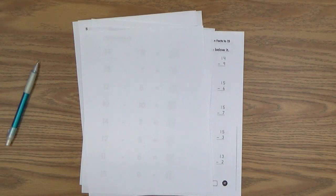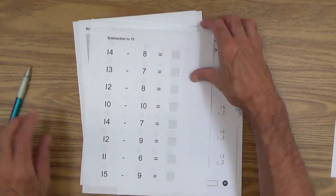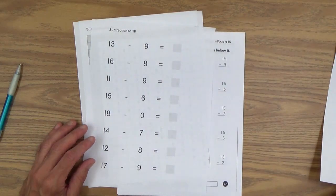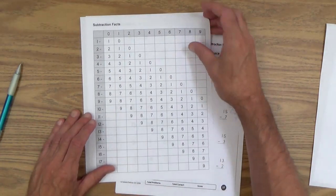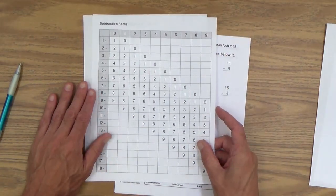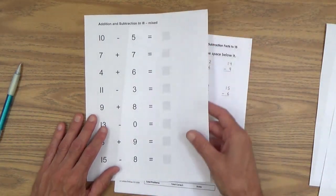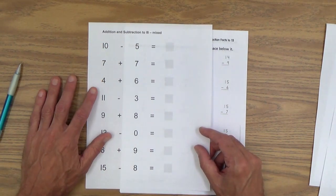Welcome to lesson 35, subtraction to 18. Here's what you will need for this lesson: paper, pencil, and several printables from the early gifted manual. This one is called subtraction to 15, subtraction to 18. Then we have a table called subtraction facts, and finally a mixed problem set, addition and subtraction to 18. This makes the challenge greater because your child will have to use two different strategies and go back and forth between the two.